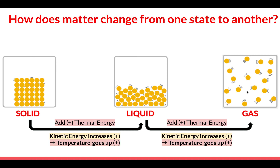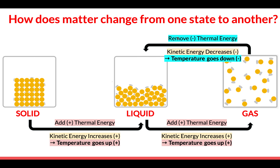How about going the other way? How can we go from a gas to a liquid? It has to be the opposite of adding thermal energy. If you want it to go from a gas to a liquid, these particles need to slow down — you want to make them move less and less so they can start to get close together again. You need to remove thermal energy. When you remove thermal energy, these particles will start to slow down and their kinetic energy will decrease. When their kinetic energy decreases, their temperature will also go down, and that's how you go from a gas to a liquid.